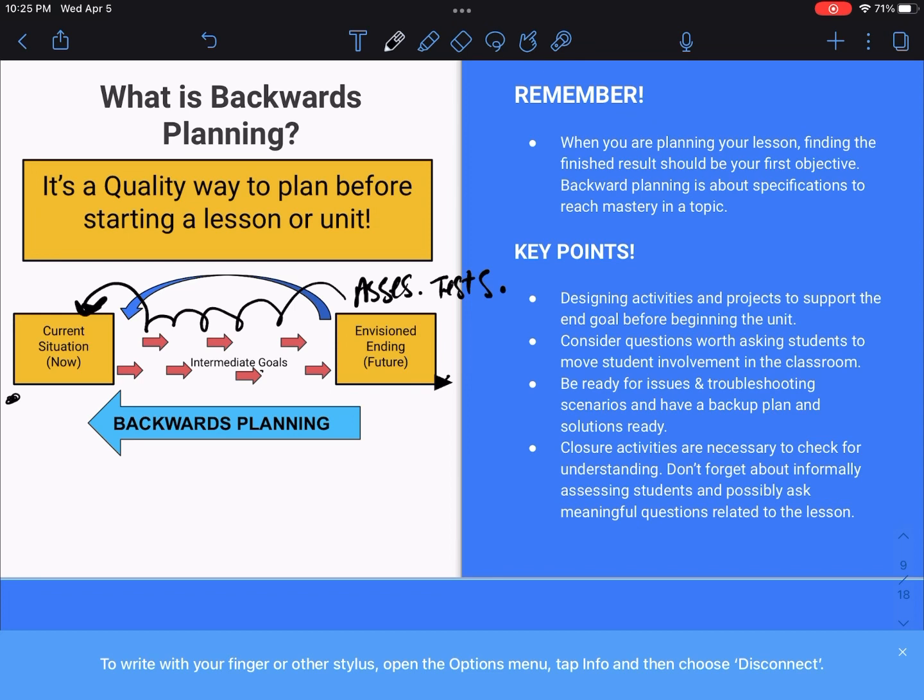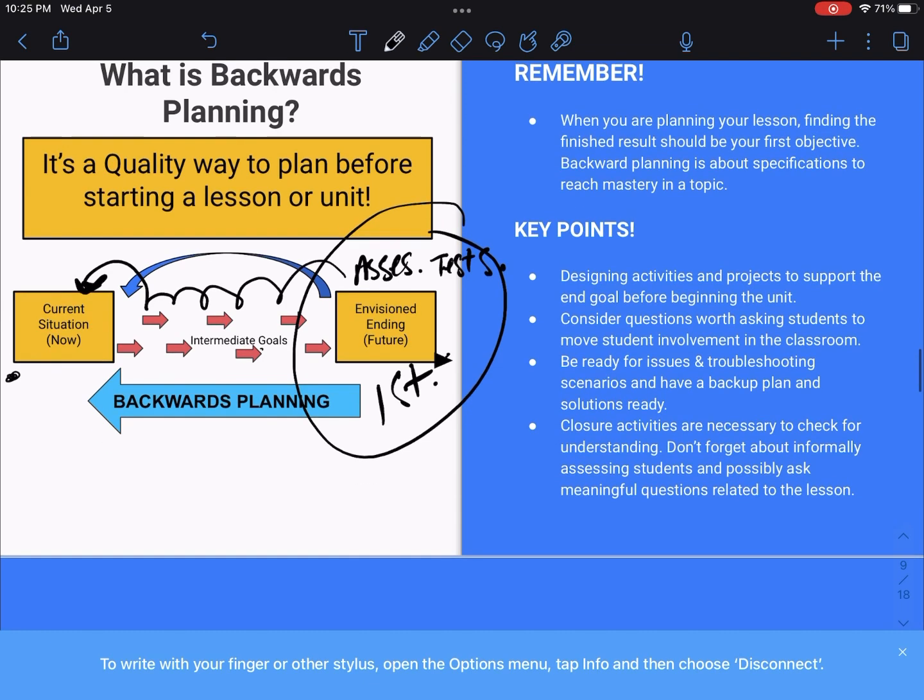So remember, when you're planning your lesson, finding the finished result of what you want the kids to learn, you're going to do this first. Backwards planning is all about specifications to reach mastery in a topic. Here are some key points that should help you during the test. Designing activities and projects to support the end goal before beginning the unit. So before you begin the unit, you should already have your activities and projects planned. You have to consider questions worth asking students to move student involvement in the classroom. You also have to be ready for any issues and troubleshooting scenarios and always have a backup plan ready. Like sometimes the projector isn't going to work, the internet could go out. You have to have a backup plan because if you don't have anything and your technology isn't working, then that is just wasted class time.